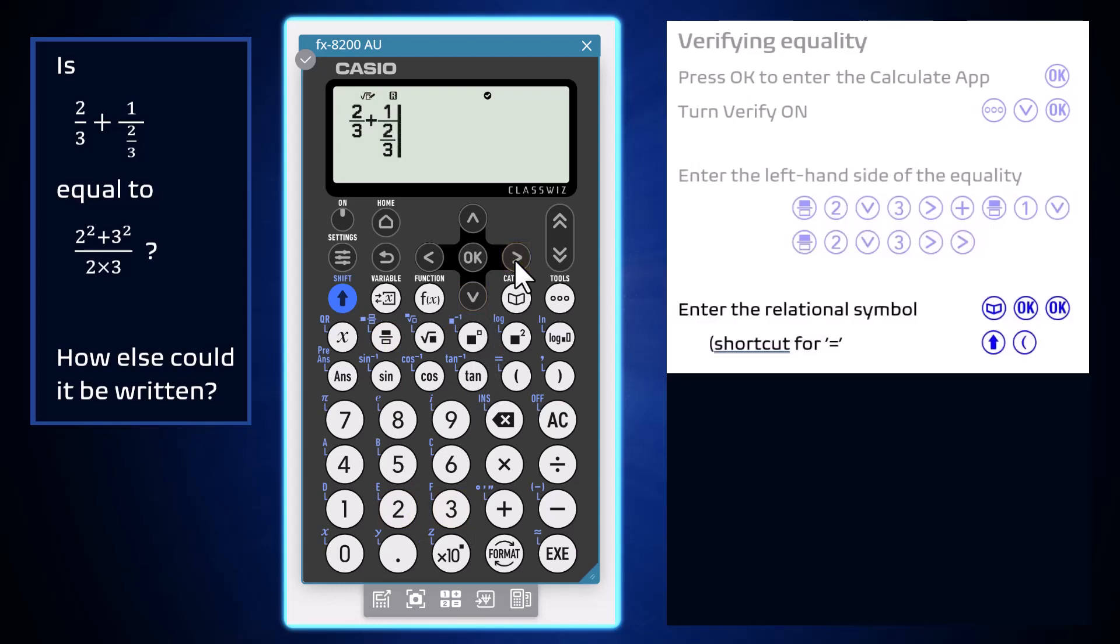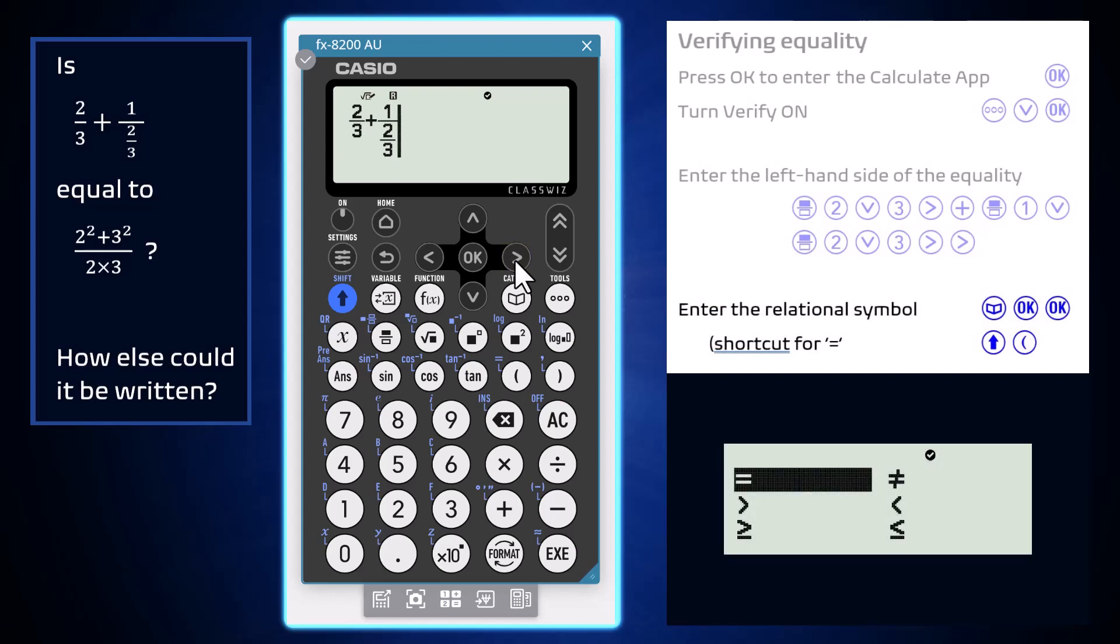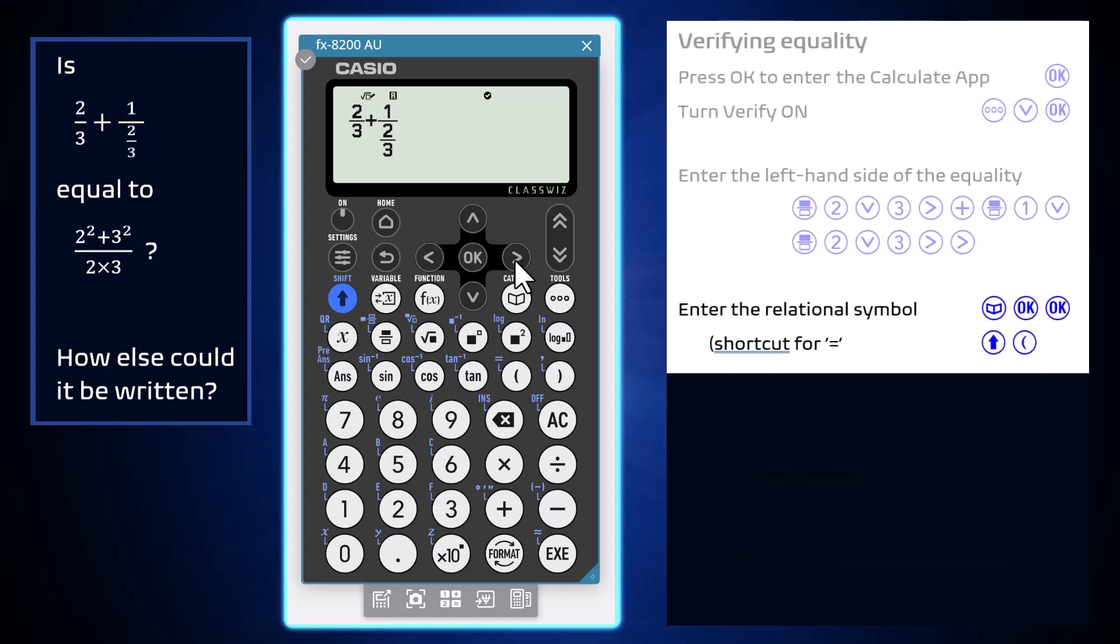Now enter the relational symbol required. Verify works with a range of relational symbols like equals to, greater than, greater than or equals to, etc. The full range can be accessed by pressing the catalog key, pressing OK to open the verify catalog, navigating as required, and pressing OK to enter the desired symbol.